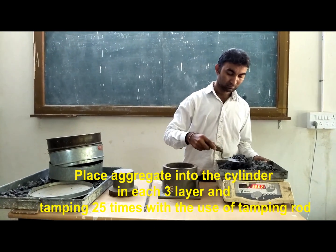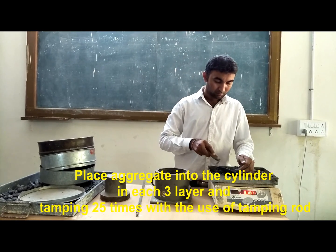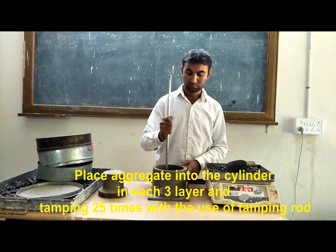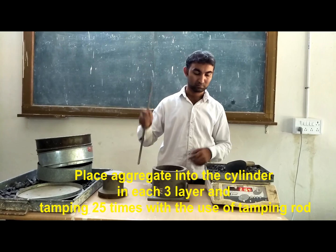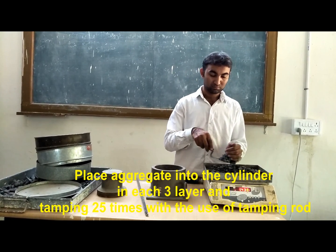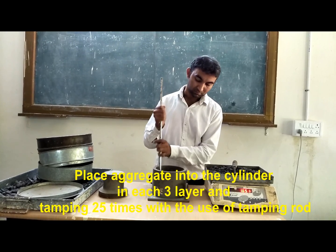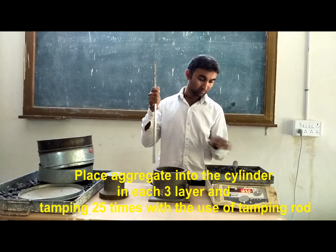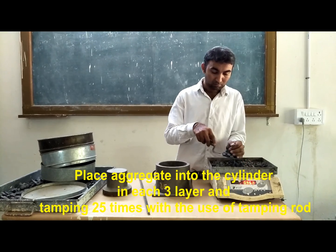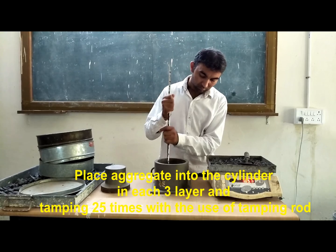Place the aggregate into the cylinder in 3 layers, tamping 25 times with the use of the tamping rod. Take weight of the aggregate.